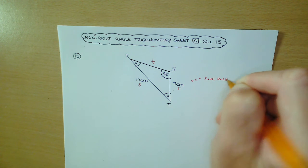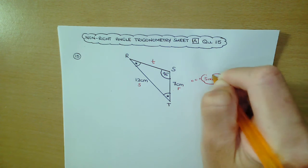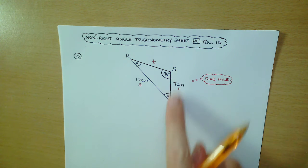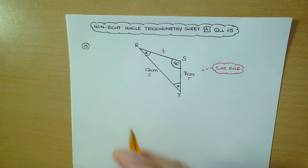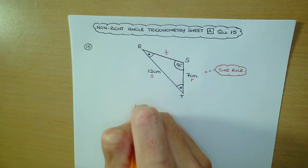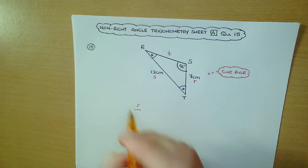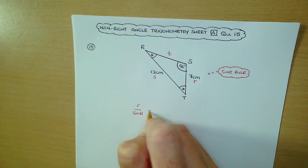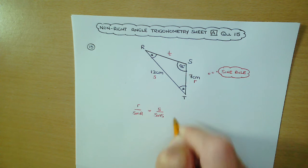Next thing we're going to do is write out the sine rule in terms of R, S, and T. So R over sine R is equal to S over sine S, which is equal to T over sine T.